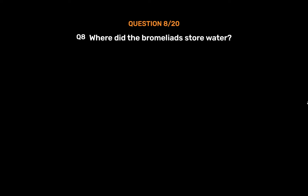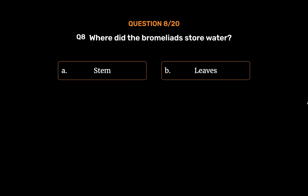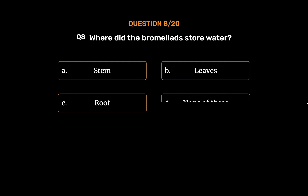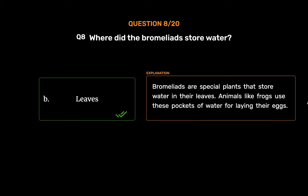Question number 8. Where do Bromeliads store water? Option A: Stem. Option B: Leaves. Option C: Root. Option D: None of these. The correct answer is Option B, Leaves. Bromeliads are special plants that store water in their leaves. Animals like frogs use these pockets of water for laying their eggs.